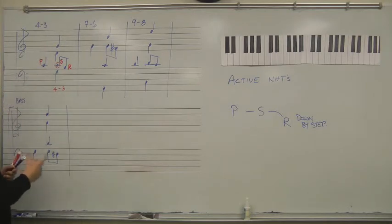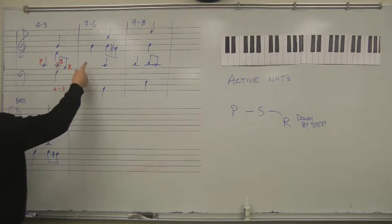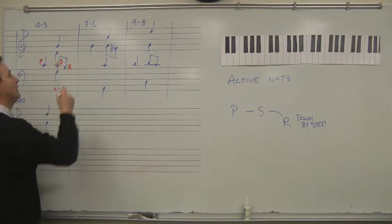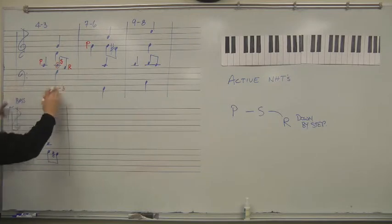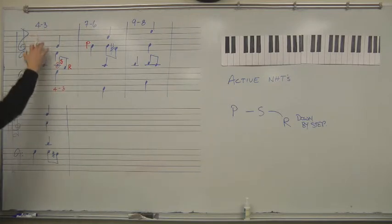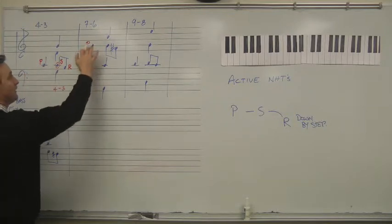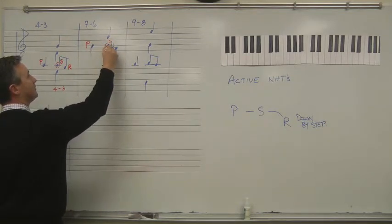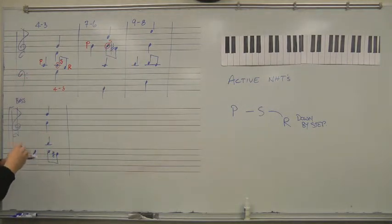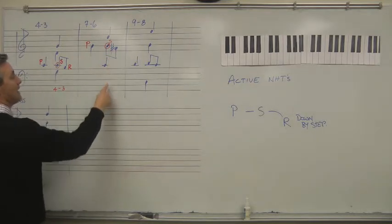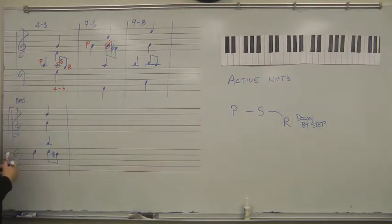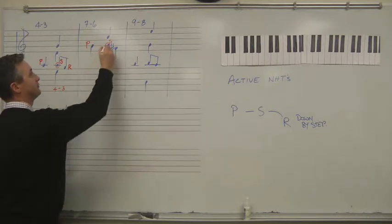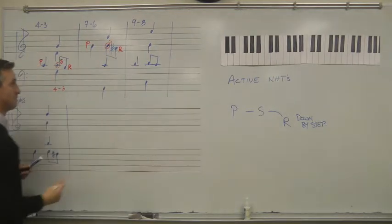This is called the 7-6 suspension. In this case there's a chord occurring — it could be any chord that contains a G — and that note is the preparation. This is part of a chord that has a C in it; the next chord has a G in it. Then on the next beat you have the suspension itself, the note that does not fit in the chord. This chord is an F-sharp, A, C chord, and the G does not fit in that chord. But then the F-sharp is part of the chord, and the suspension resolves down by step to become part of the chord.